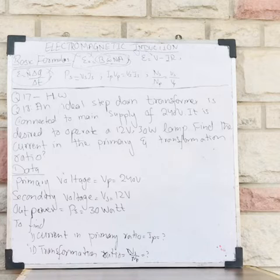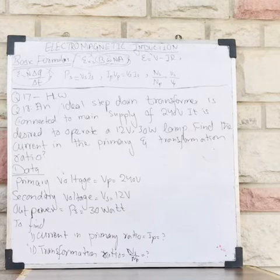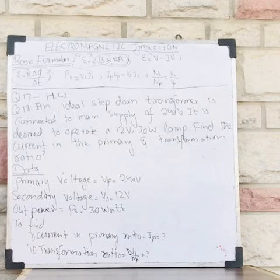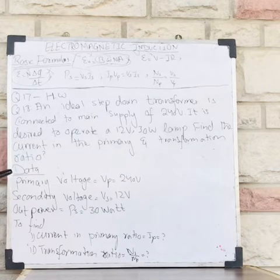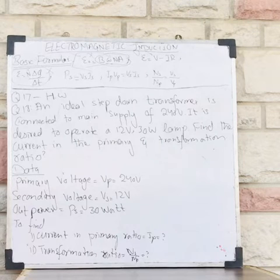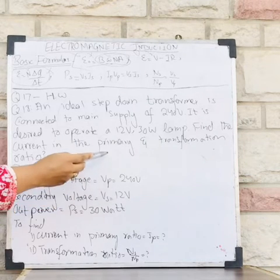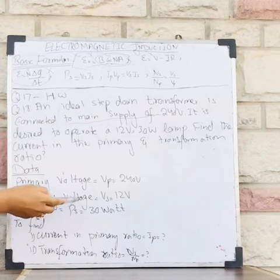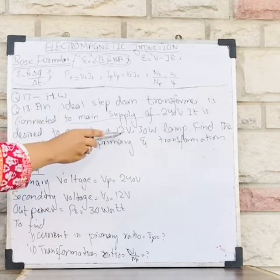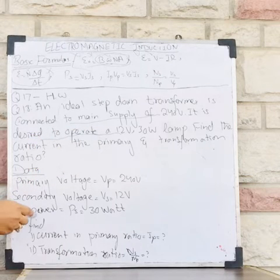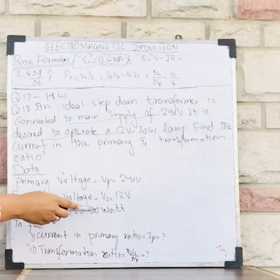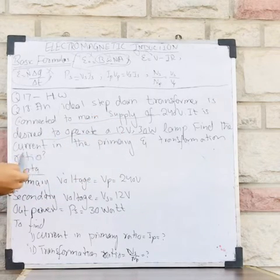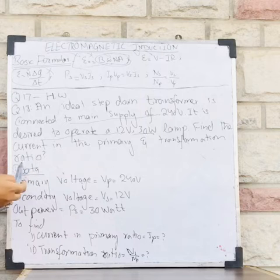This is an interesting as well as tricky question. Let's extract the data from the statement. The primary voltage Vp is equal to 240 volts. The secondary voltage Vs is equal to 12 volts. The output power Ps is equal to 30 watts.